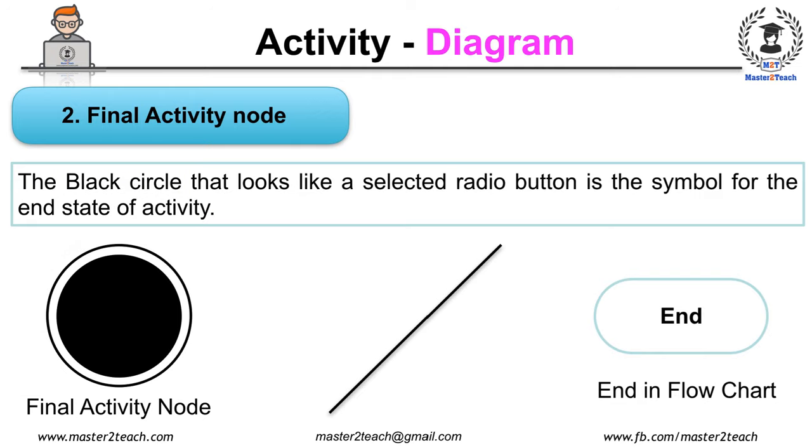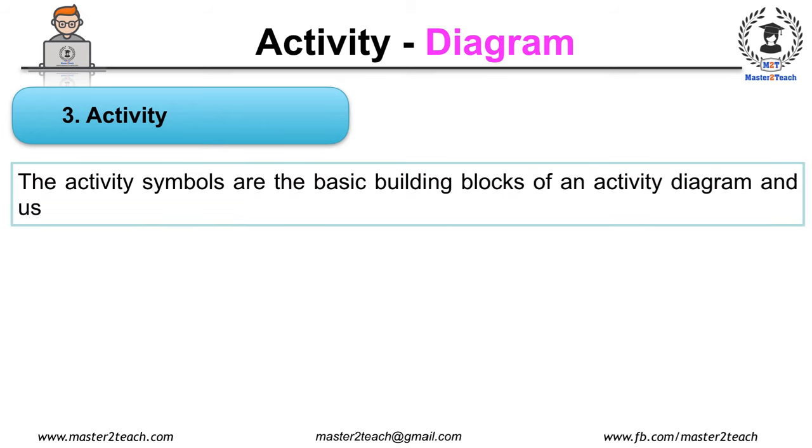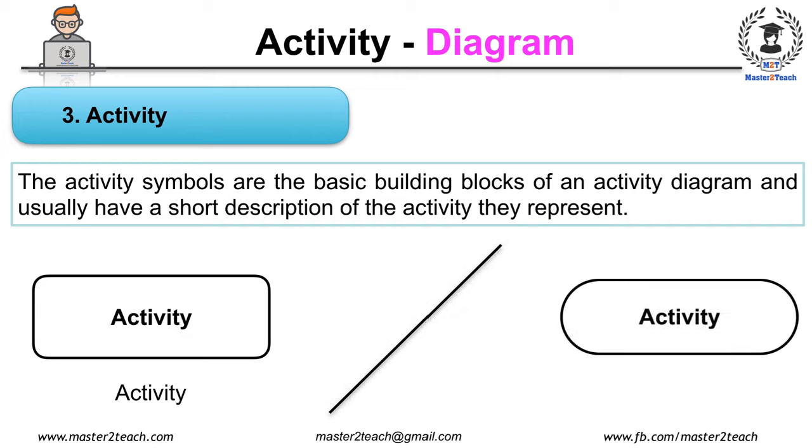Another notation is Activity. The activity symbols are the basic building blocks of an activity diagram and usually have a short description of the activity they represent. It is represented by the oval shape as well as a round edge rectangle box as shown in the figure.